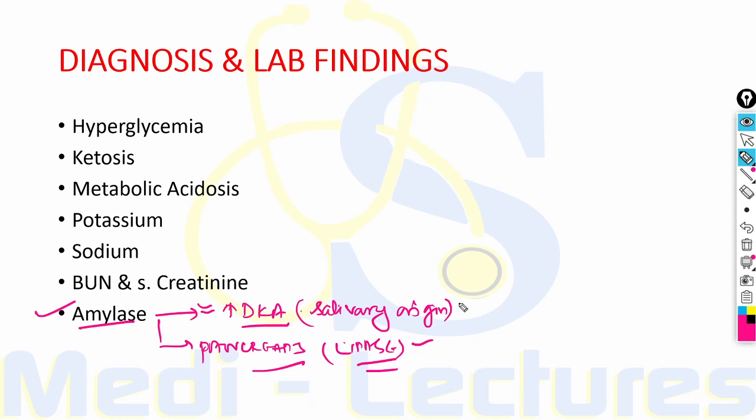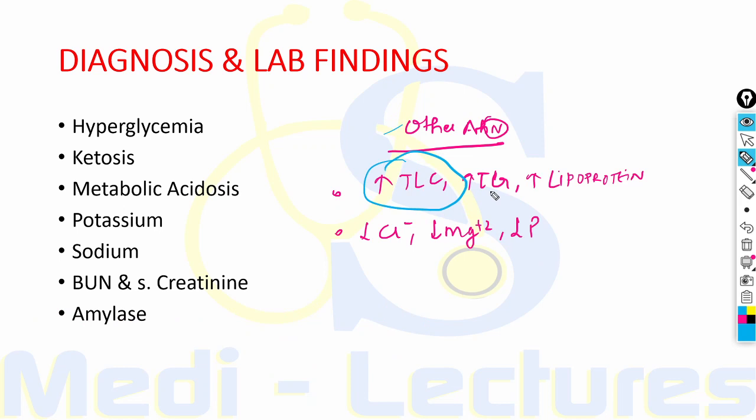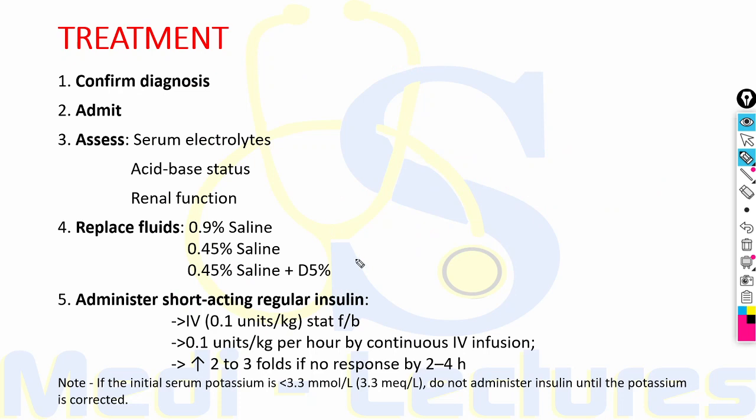Other lab abnormalities in DKA include increased total leukocyte count, increased triglyceride levels, and increased lipoprotein. There can also be decreased chloride, decreased magnesium, and decreased phosphorus stores, which are not accurately reflected by serum levels due to hypovolemia and hyperglycemia.